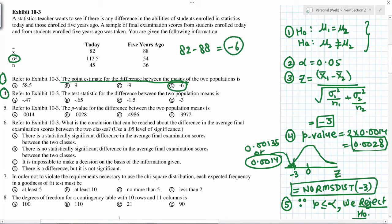Test statistic, we got negative 3. P value, we got 0.0028. What is the conclusion? Because we reject H0, that means this is not true and this is true, which means mu1 is not equal to mu2. So there's a statistically significant difference in the average final examination scores between the two classes.